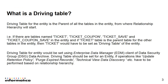So what is a driving table? A driving table is the parent table of all the tables in the entity, from where the relation hierarchy will start. For example, let us consider four tables: Ticket, TicketCoupon, TicketSave, and TicketCouponSave. If Ticket is the parent table, we have to mark the Ticket table as the driving table of the entity.